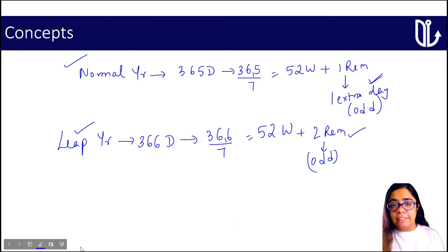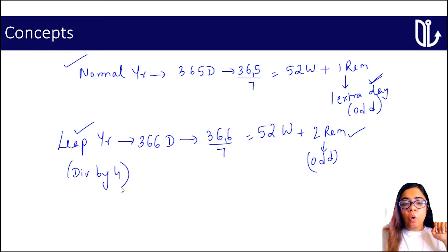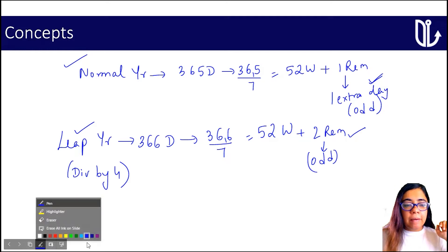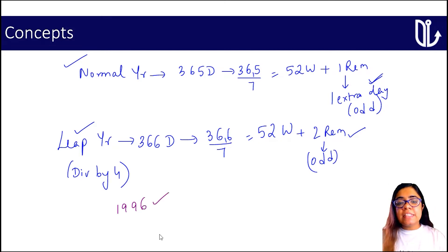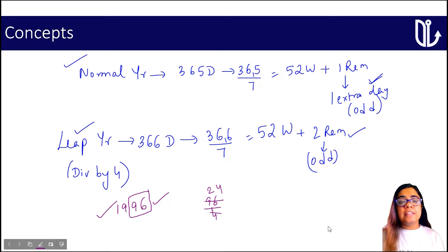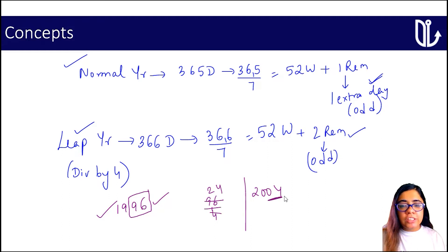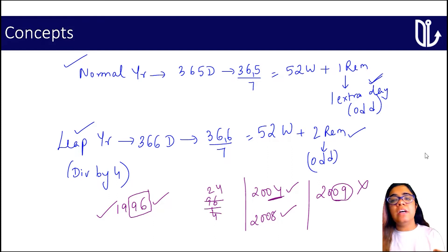How do you identify whether a year is a leap year or not? If a year is divisible by four, it is termed as a leap year. A number is divisible by four when the last two digits are divisible by four. For example, 1996 — is 96 divisible by four? Yes, so this year is a leap year. Similarly, 2004 and 2008 are leap years. But 2009 is not divisible by four, so it is not a leap year; it is a normal year.